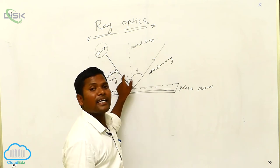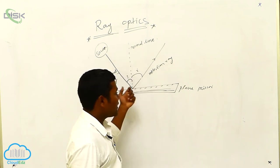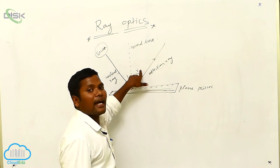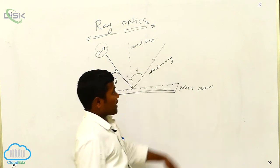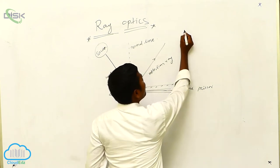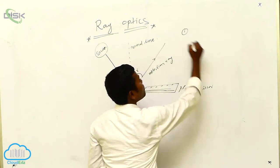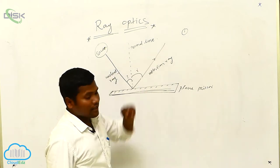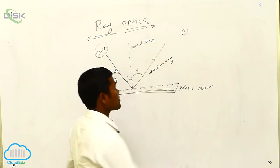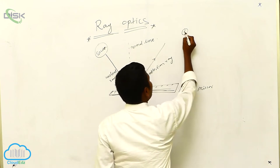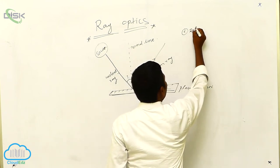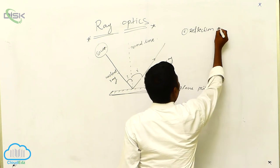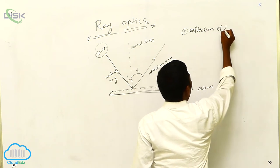That's why we are calling this the incident angle, and this is called the reflection angle. That's why they have given us two rules — the laws of reflection.